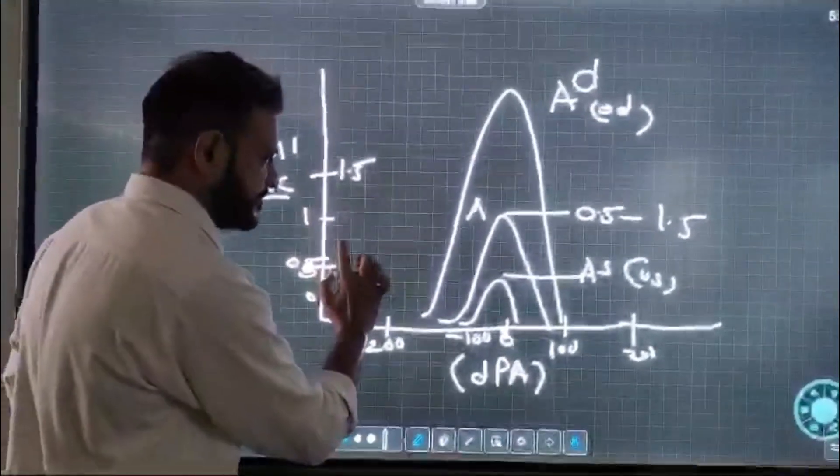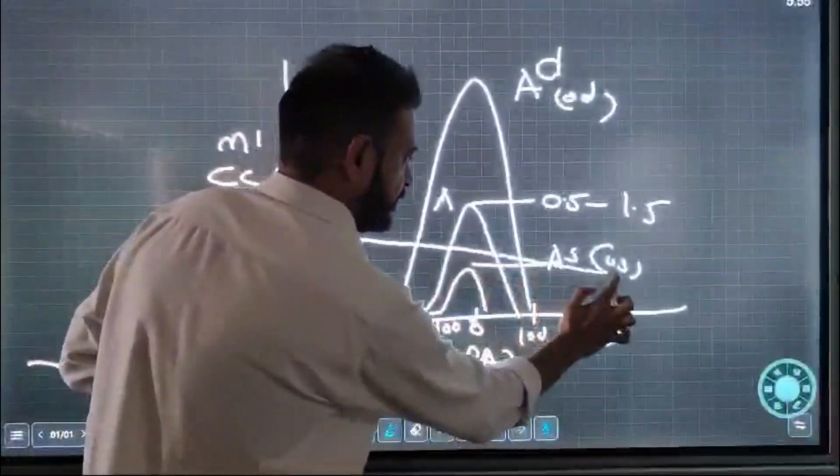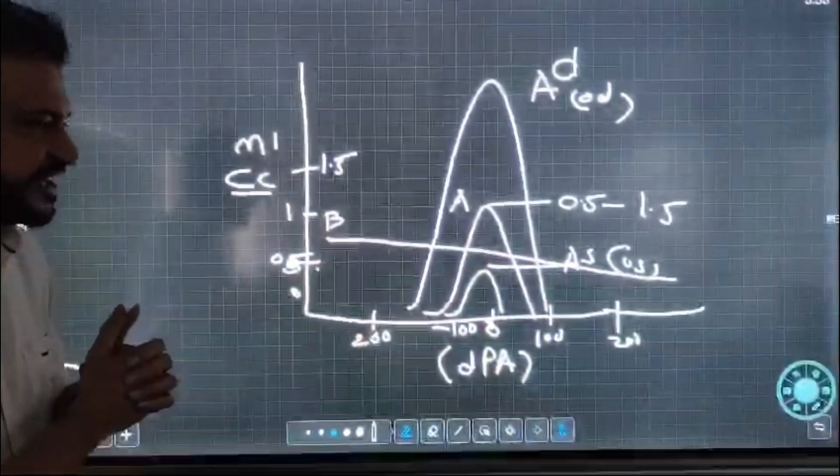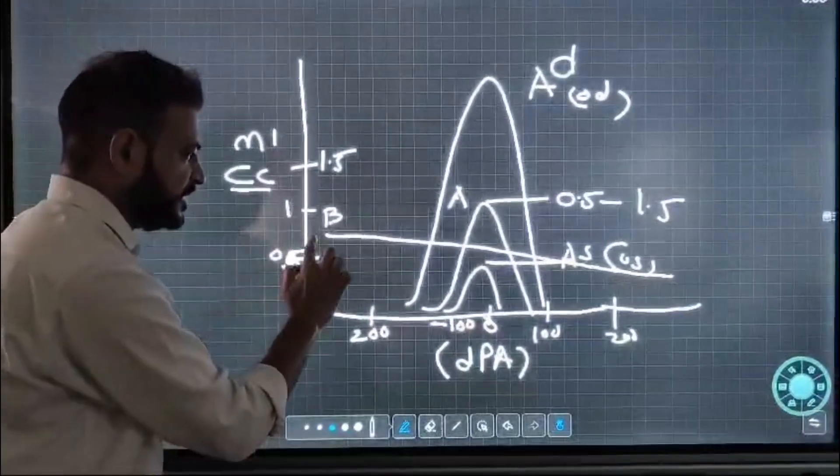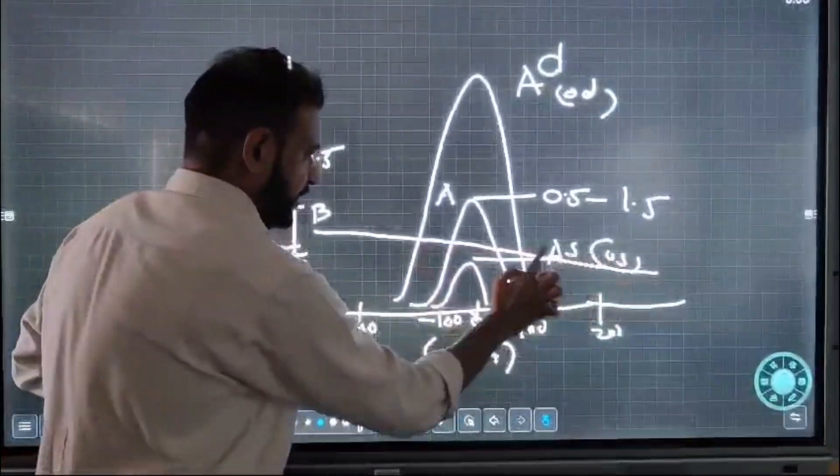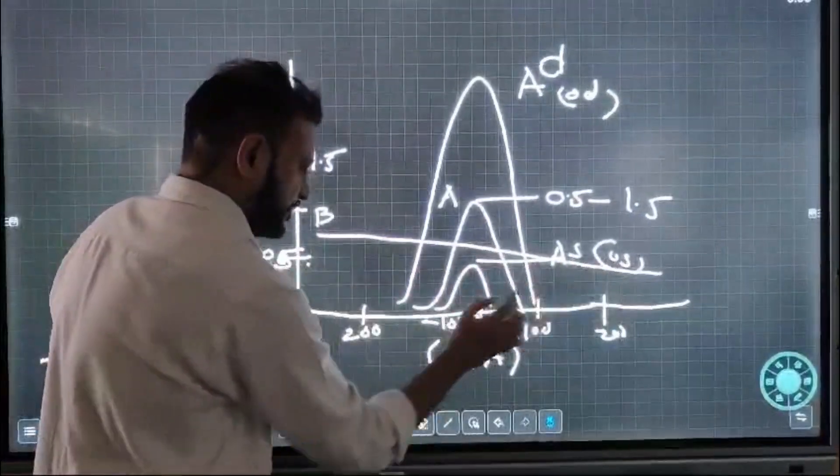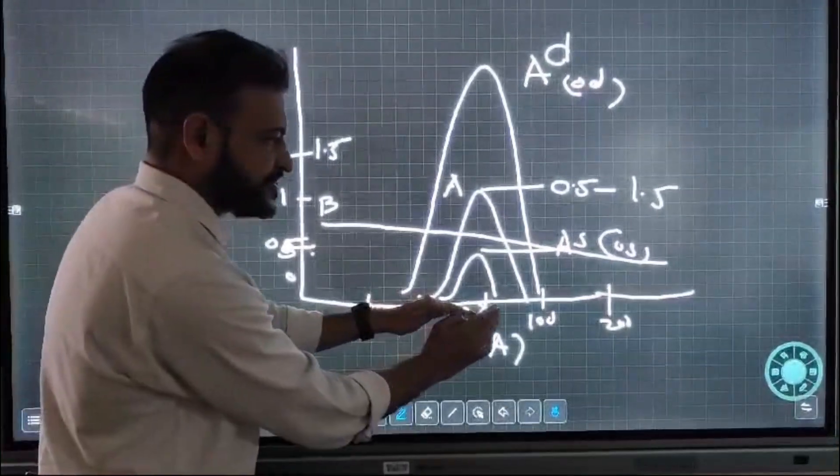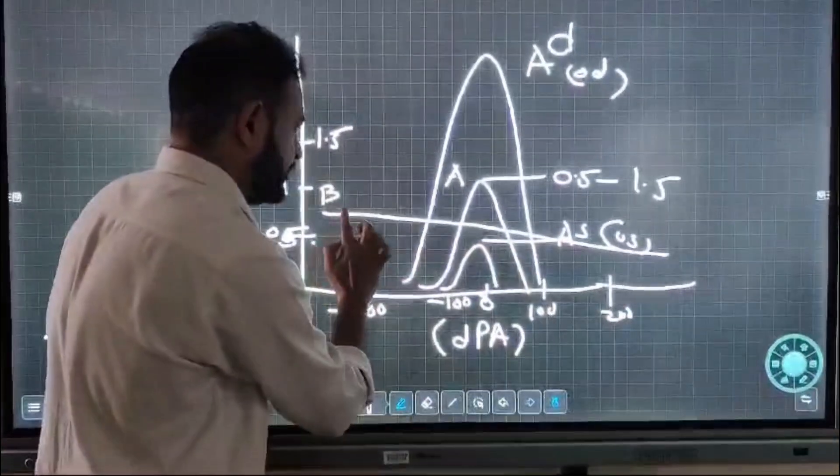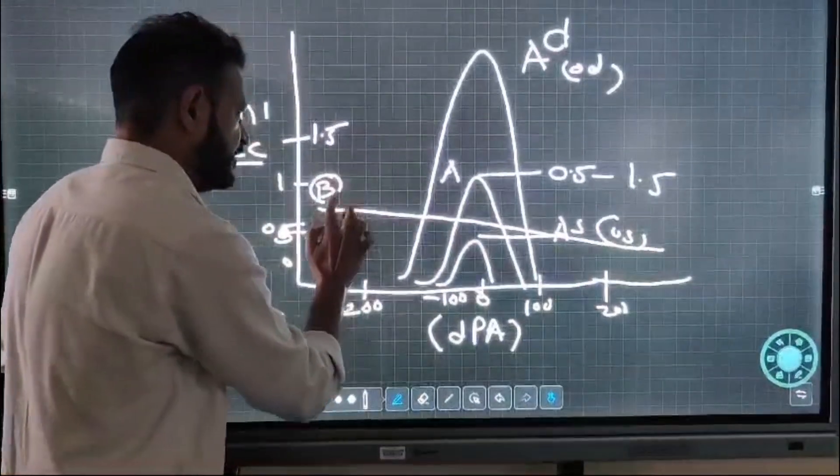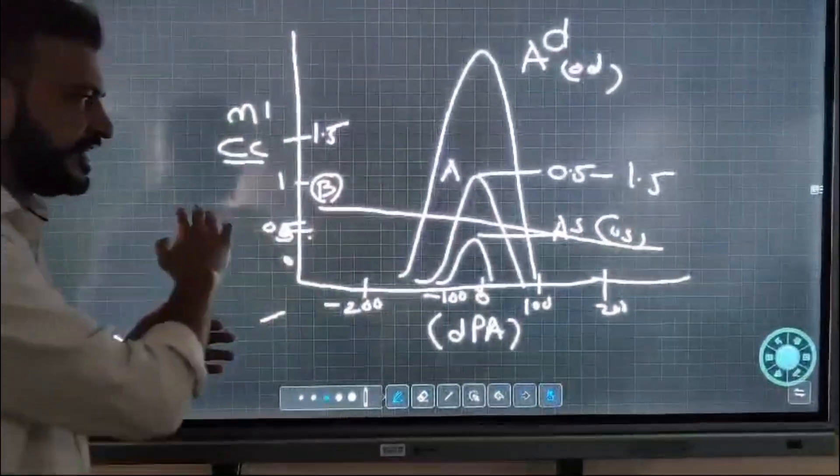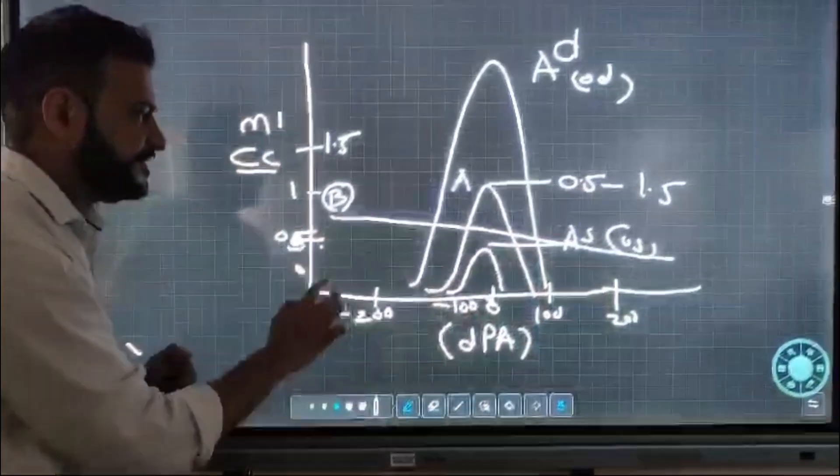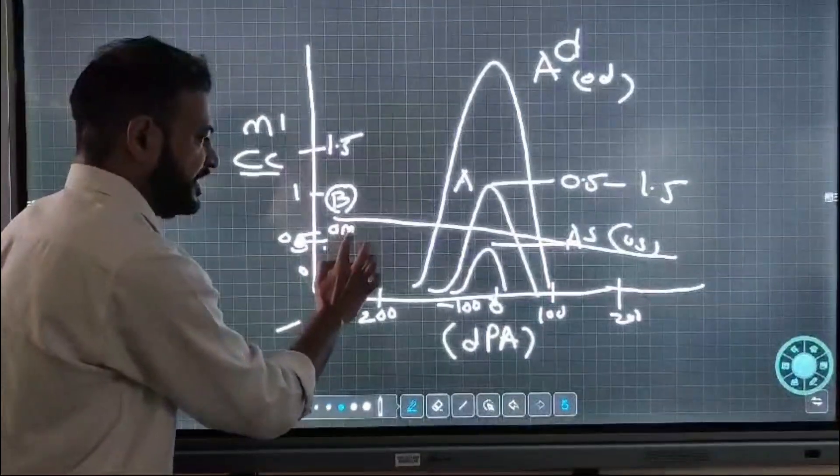Type B is a flat curve. What does a flat curve mean? The compliance of the middle ear is constant at whatever pressure is given. At negative pressure, at zero pressure, or at high pressure, the compliance remains constant. We read it as a flat curve with constant compliance at all pressures. It is seen in otitis media with effusion.